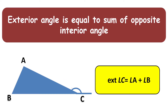The exterior angle of a triangle is equal to the sum of the two opposite interior angles. The exterior angle is angle C, and the two opposite interior angles are angle A and angle B, so the sum of angle A and angle B must equal the exterior angle C.